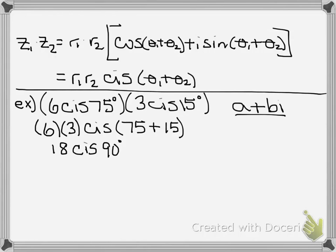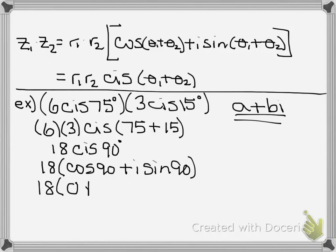We've multiplied it in polar form, but remember we want it to be in a plus bi form. So what we need to do is expand cis. That is 18 times cosine of 90 degrees plus i sine 90 degrees. And the cosine of 90 degrees is zero. Plus i sine of 90 degrees is 1. So we distribute 18 times 0, and we end up with a final answer of 18i. Not too bad, right?